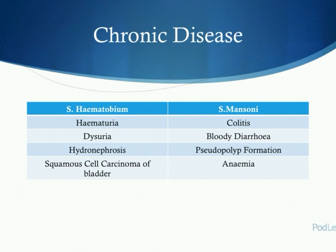Depending where these ova deposit themselves determines the symptoms which arise. For haematobium, or urinary schistosomiasis, the eggs are usually deposited within the ureters or the kidneys. As a consequence, we get haematuria, dysuria, and hydronephrosis. It's also the most common cause of squamous cell carcinoma of the bladder within sub-Saharan Africa. The exact mechanism is still unknown — it's thought that either the ova expose the bladder epithelium to more carcinogens, or that nitrosamines and chemicals released by the ova are carcinogenic in nature themselves.